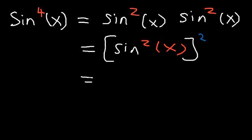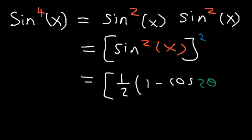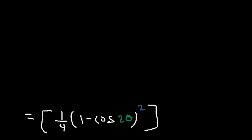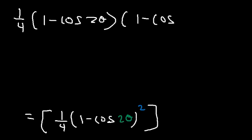The formula for sine squared is one-half times (1 minus cosine 2θ). We still have the square on the outside, so one-half squared gives us one-fourth, and that is multiplied by (1 minus cosine 2θ) squared. We can rewrite this as one-fourth times (1 minus cosine 2θ) multiplied by (1 minus cosine 2θ).